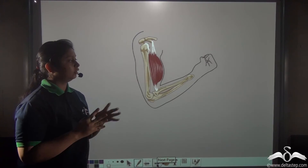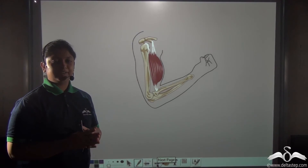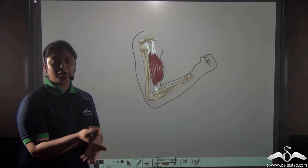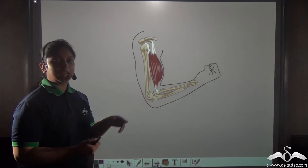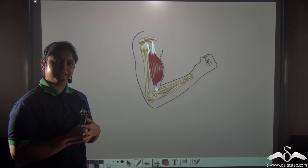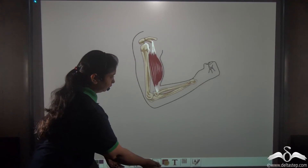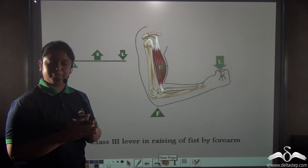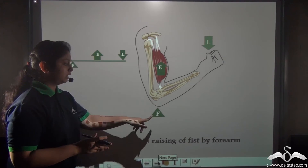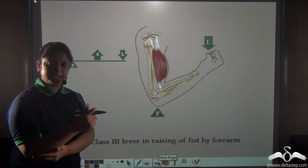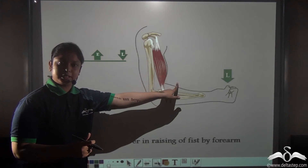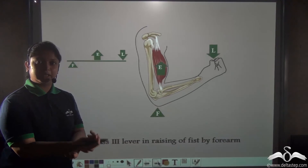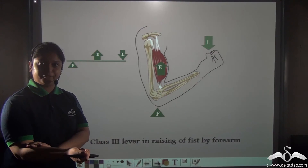In our human body, we also have an example of a class 3 lever — the lifting of the wrist by the forearm. Can you locate the fulcrum, the load, and the effort? Since this is a class 3 lever, the effort should be located in between the fulcrum and the load. The fulcrum is the elbow, which remains fixed. The effort is the muscle on which we exert a force, and the load is the wrist that we are raising with the help of our forearm.